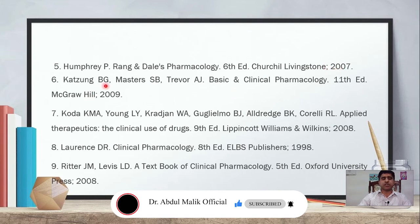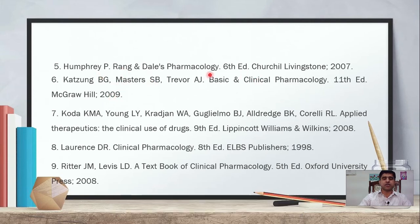Katzung BG, Masters SB, Trevor AJ — Basic and Clinical Pharmacology, 11th edition, McGraw-Hill, 2009. This is the Katzung book; newer editions are also available. A review book of Katzung is also available in addition to the full Basic and Clinical Pharmacology text.